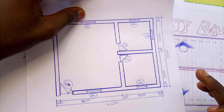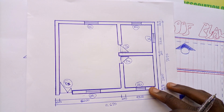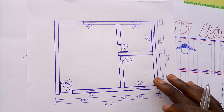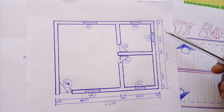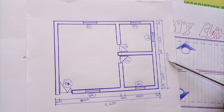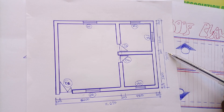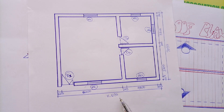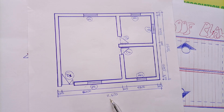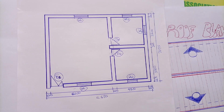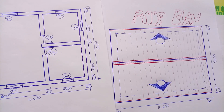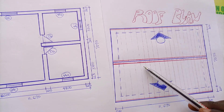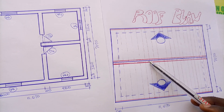This is the roof plan of the floor plan we've been using for quite some time. The width of the plan is 7075mm and the length is 11,675mm. The same dimensions apply to this roof plan.